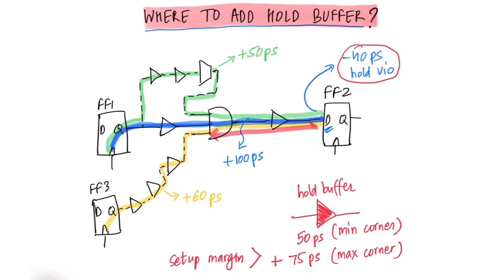So if we place our hold buffer anywhere on this red section, then it will cause setup timing violation on our yellow path because we only have 60 picoseconds of setup margin. But this delay buffer adds 75 picoseconds of delay.